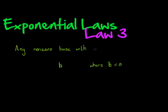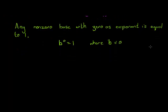With 0 as exponent is equal to 1. That's it: B to the power of 0 is equal to 1 as long as B is not equal to 0. If its exponent is equal to 0, then it's equal to 1.